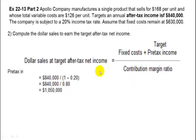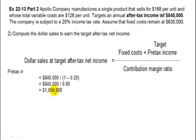We apply the same conversion: take the after-tax income of $840,000 and divide by 1 minus the tax rate — that is, 1 minus 0.20, which is 0.80 — to get the pre-tax income of $1,050,000.